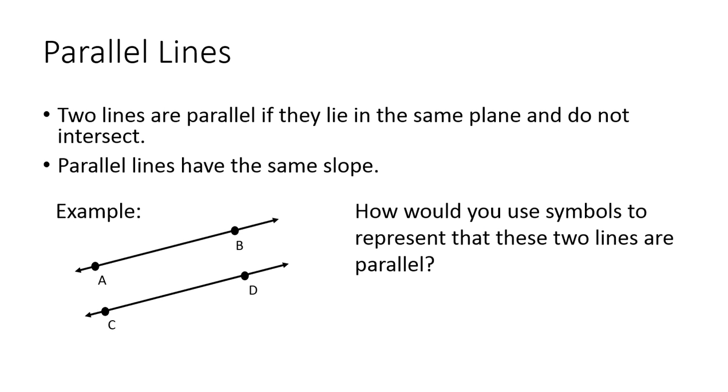Next, we have parallel lines. Two lines are parallel if they lie in the same plane and do not intersect. Parallel lines have the same slope. We'll be working with that later. So how would you use symbols to represent that these two lines are parallel? Well, first, you recognize that these are lines. They have arrows.